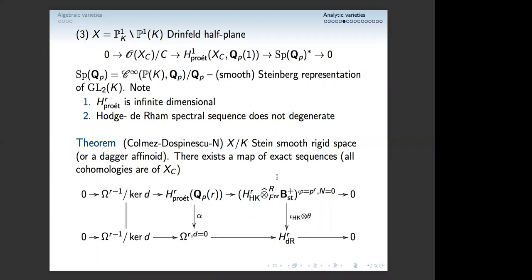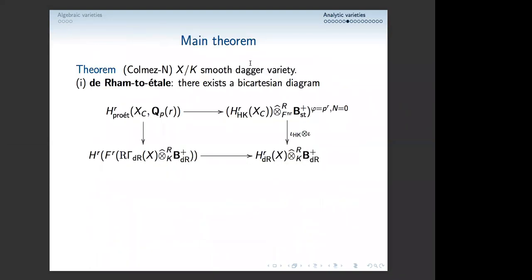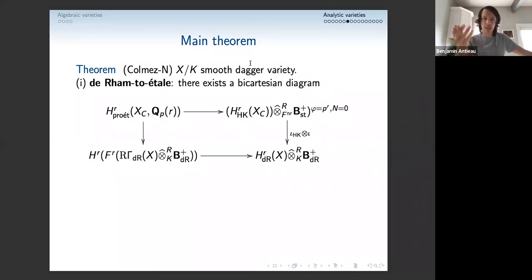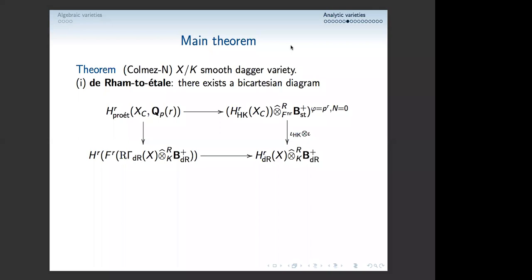That's a natural point to stop. In the second part, I want to state the main theorem. We stated it for smooth varieties which we make overconvergent — rigid analytic varieties with overconvergent structure — mostly for topological reasons and for handling locally small objects. We claim there exists a bicartesian diagram very similar to the one in the algebraic setting. Now instead of étale, we have pro-étale. Here you have the Higgs-de Rham part, B_{st}^+, Frobenius = p^R, N=0 component. Here you have the de Rham part — you take the complex of de Rham cohomology, tensor it with B_{dR}^+, take a filtration of that, then take homology of that.